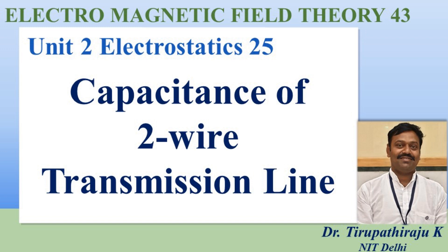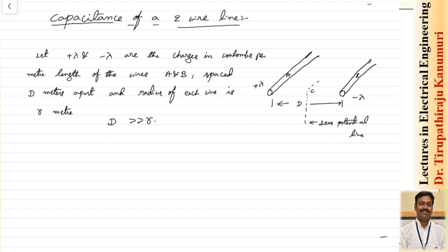Today we are going to discuss the capacitance of a two-wire transmission line. Let us assume that two conductors are there — one having a charge of plus lambda and the second one having a charge of minus lambda coulombs per meter length, spaced at distance d from each other. The radius of each conductor is equal to r, and r is always far less than the distance of separation d.